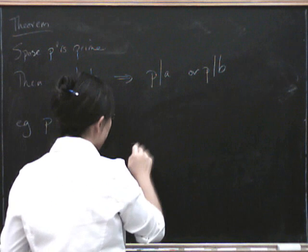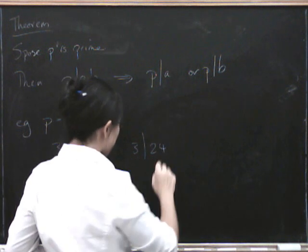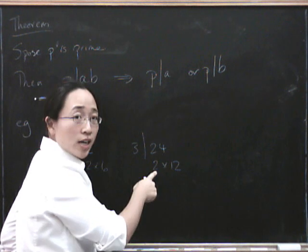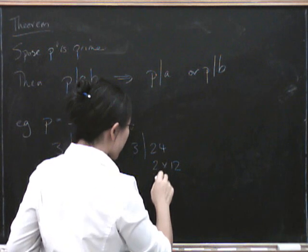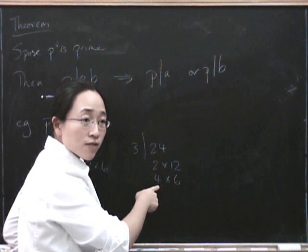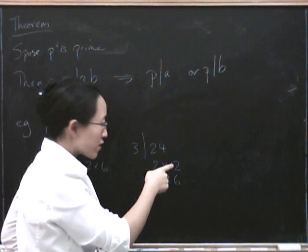And what about 3 divides 24? We could express that as 2 times 12. So 3 doesn't divide 2, so it has to divide 12. Or if we expressed it as 4 times 6, 3 does not divide 4, so it has to divide 6. Otherwise, how could it possibly divide 24?